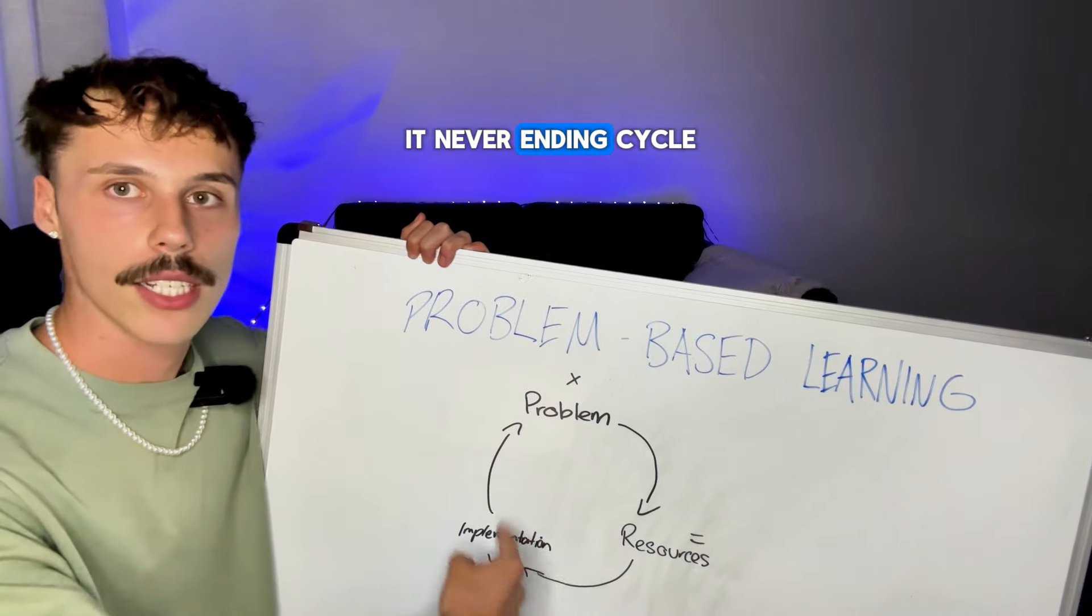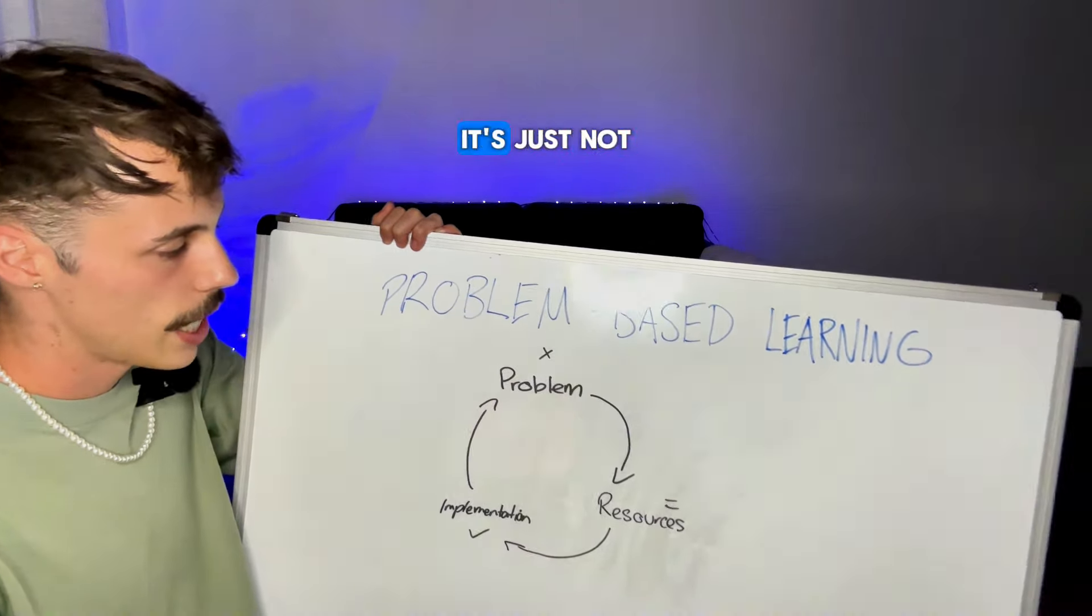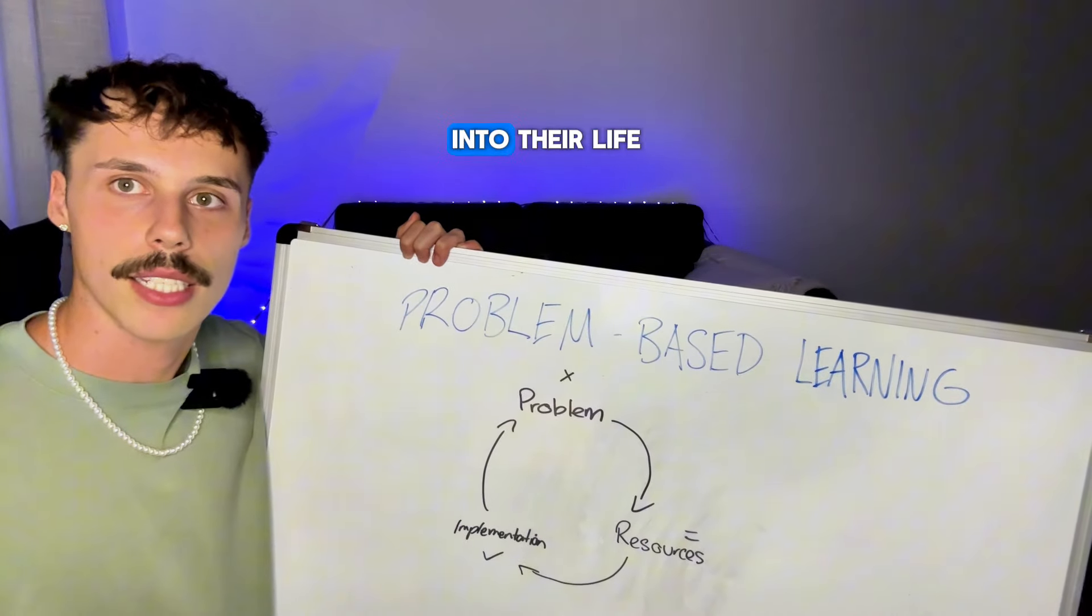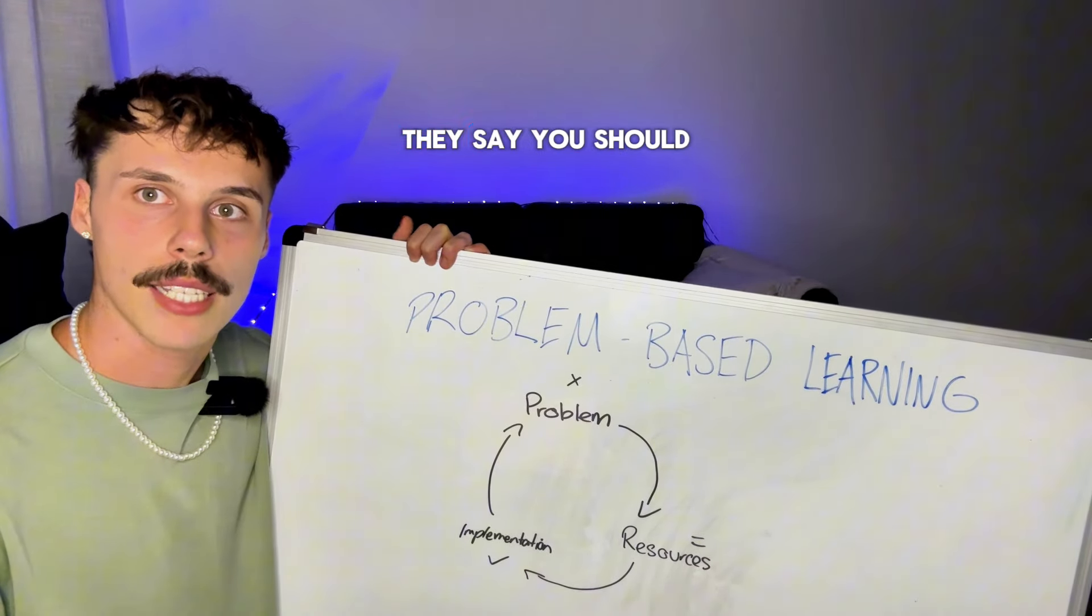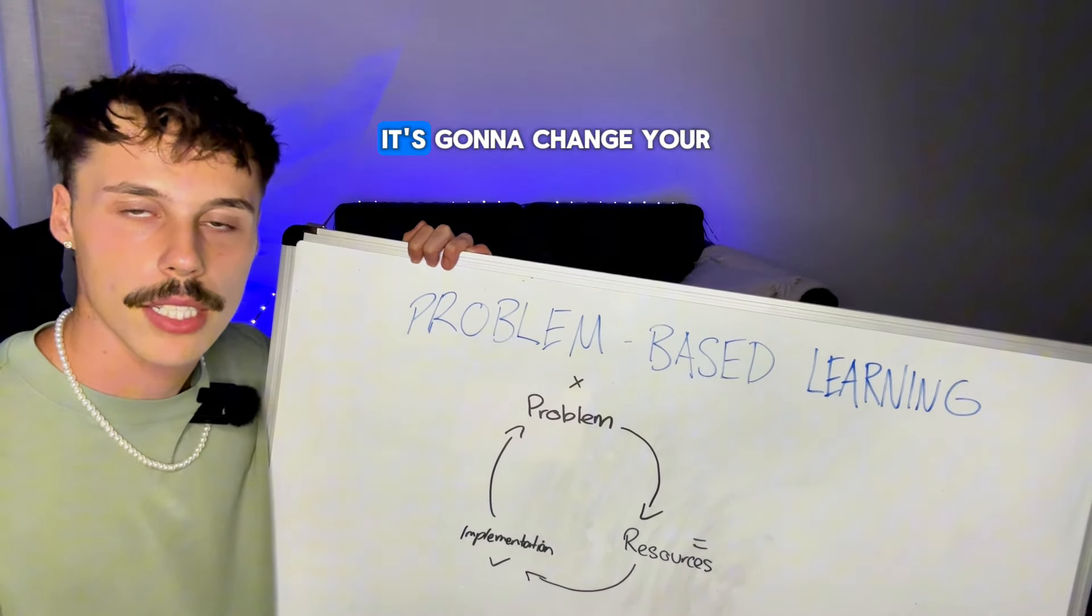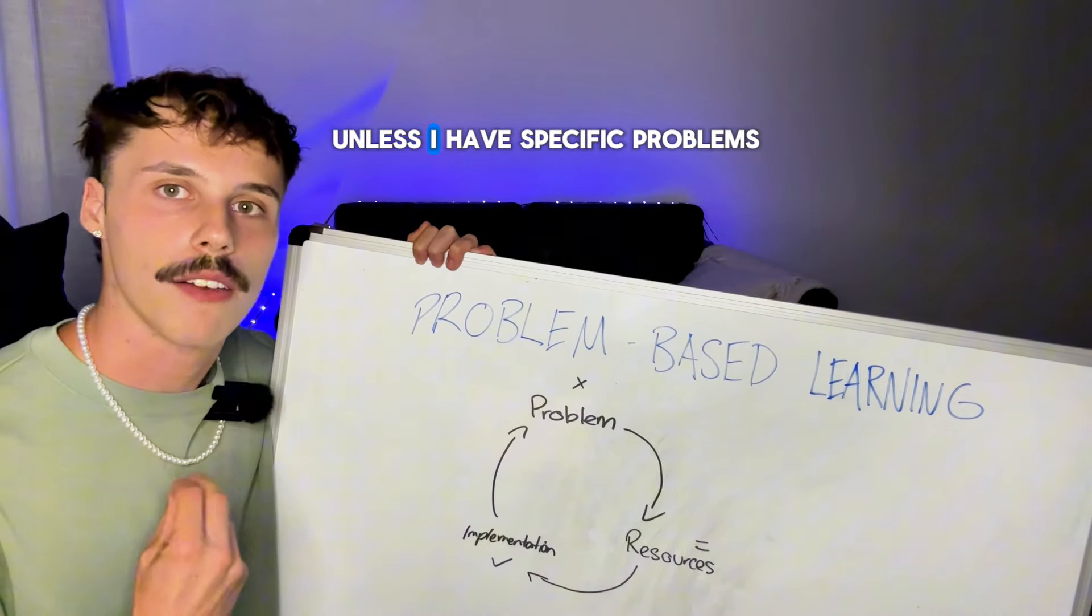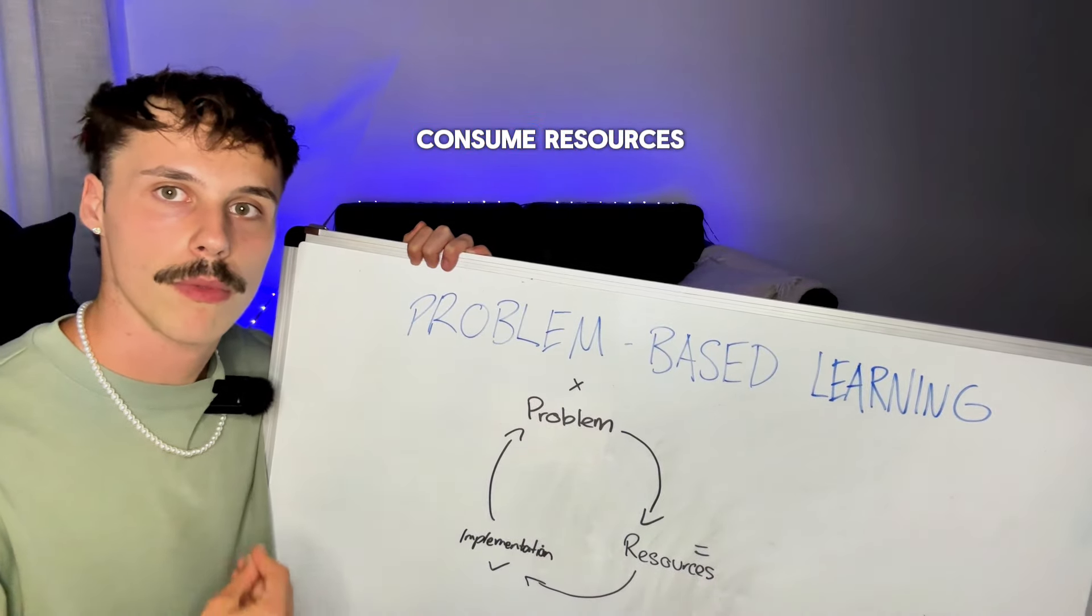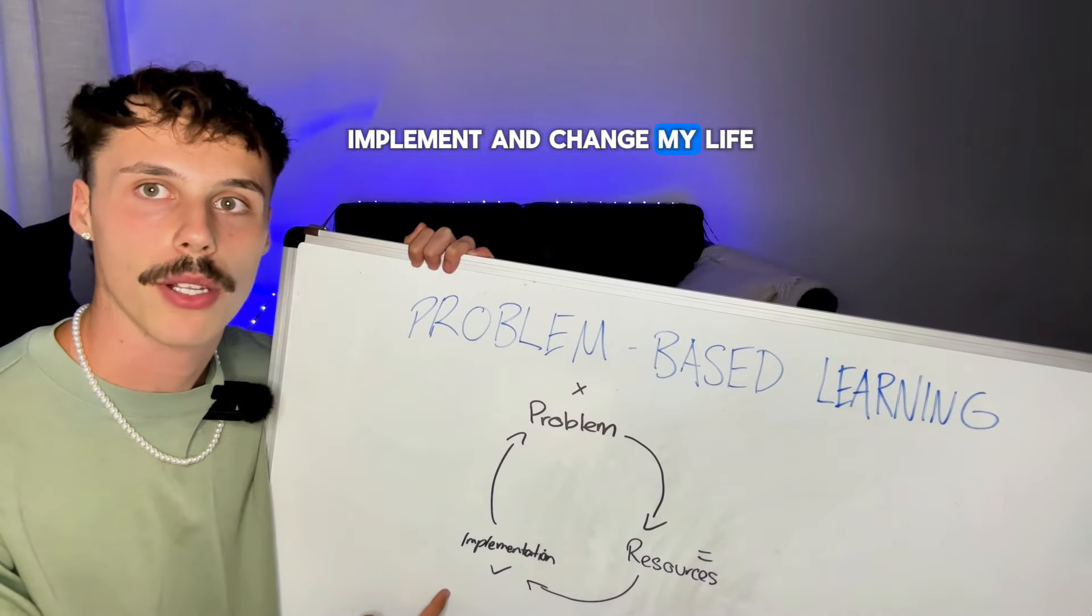So it's a never-ending cycle, but this is how you level up fast. And you can probably see, like, this makes sense, right? It's just not a lot of people actually apply this way of thinking into their life. And I hate when people, you know, they say, you should read this Stoic book. It's going to change your life. No, it's not going to change my life unless I have specific problems that require me to consume resources about Stoicism. That I could actually implement and change my life.